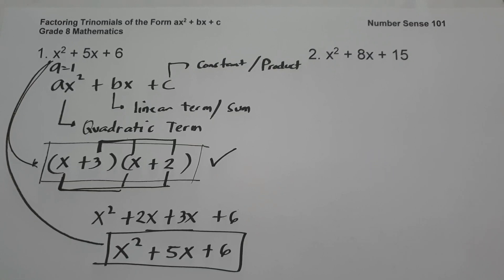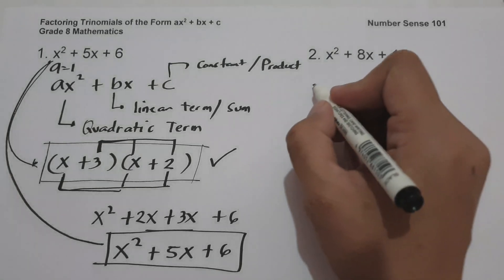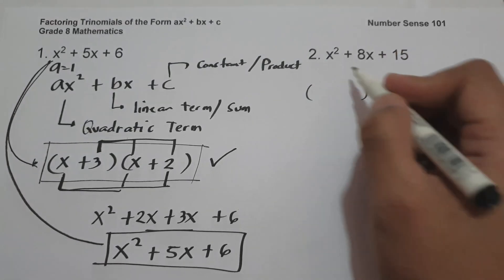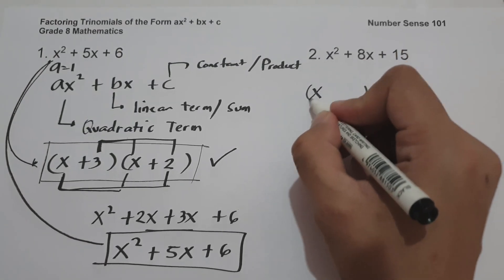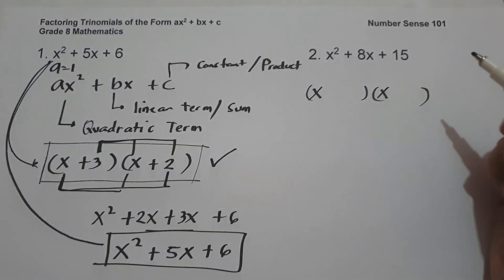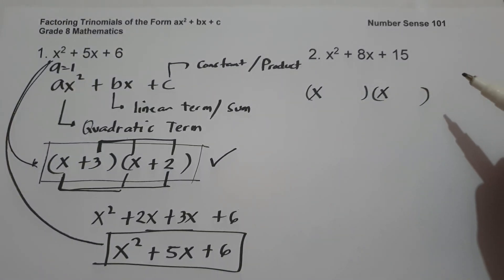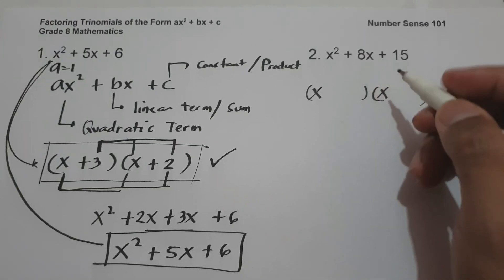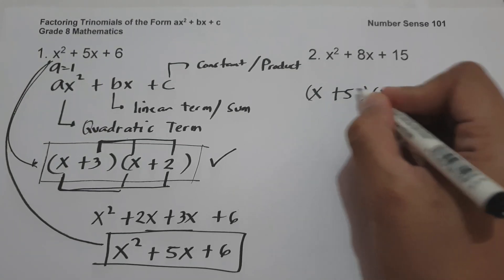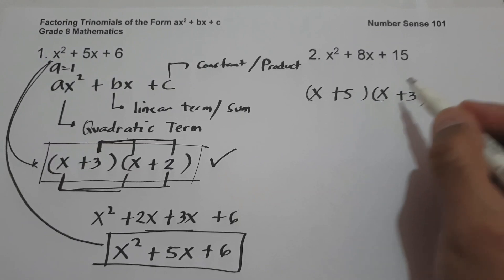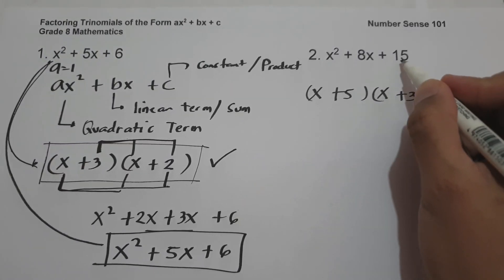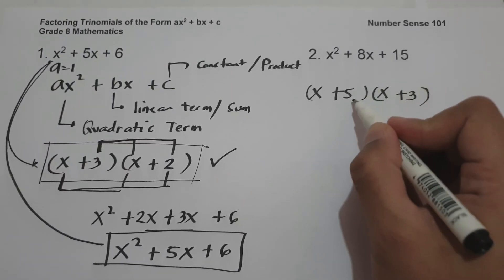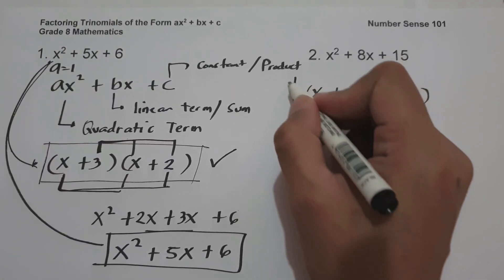On number 2, we have x squared plus 8x plus 15. Since the value of a is 1, we find the factors of x squared, which are x and x. What are the two numbers that if we multiply we get 15, and if we add we get 8? That is positive 5 and positive 3. Five times 3 is 15, and 5 plus 3 is 8. This will be our answer.